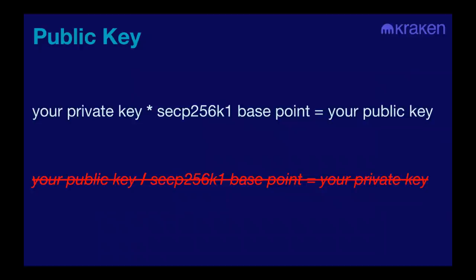You take the private key and multiply it using elliptic curve cryptography. The thing about elliptic curve cryptography is that you can do the multiplication, but the division is so computationally intensive that it is economically impossible for the foreseeable future. This makes sure that you can't calculate the private key if you have the public key. As its name implies, the public key is something you can share with others, and each private key has one public key.